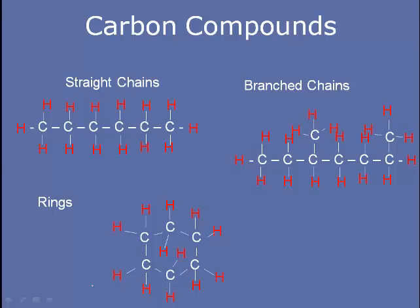Here are a few of the simpler carbon compounds and three of their different configurations. The first kind of carbon compound would be a straight chain. Here you can see a chain of six carbon atoms, and each one of the carbon atoms has four locations where it can link to other atoms. You can also have branch chains. Branch chains are slightly different, and in this case we have our six carbon backbone, but we also have a bond between a carbon and a carbon here, and another bond between a carbon and a carbon here.